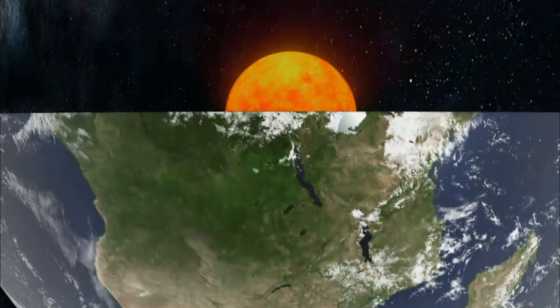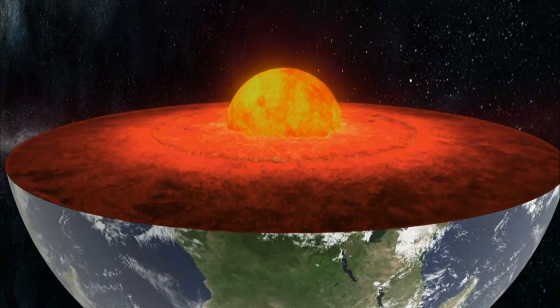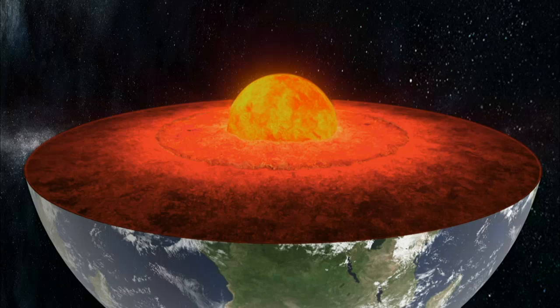In the center of the Earth is a solid iron core the size of the Moon, surrounded by an outer core of molten metal the size of Mars.